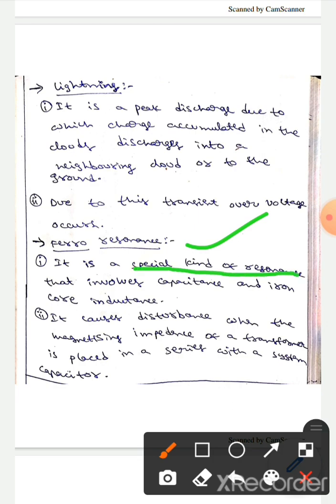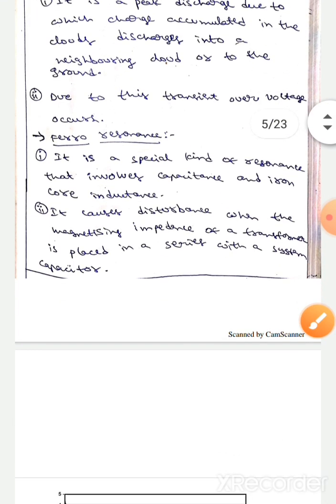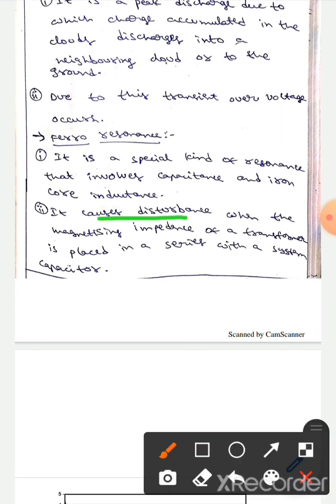The next source is ferro resonance. It is a special kind of resonance that involves capacitance and iron core inductance. It usually causes disturbance when the magnetizing impedance of a transformer is placed in series with a system capacitor.